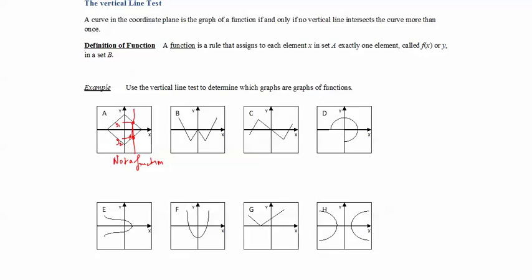Graph A is not a function as we saw. For graph B, if I draw vertical lines and none of them cross the curve more than once, then it is a function — so yes, B is a function. For graph C, similarly, I don't see any vertical line that would cross this graph more than once; every line crosses it only once, so yes, C is a function.